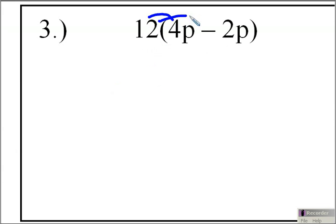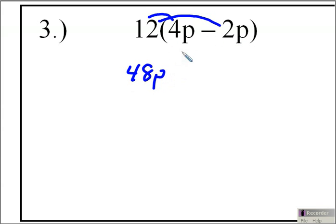And we're going to distribute the 12 to the 2P. 12 times 4P is going to be 48P. And then 12 times 2P — we have a negative sign, so that's negative 2P. 12 times negative 2P is going to be minus 24P. And that will be my final answer.